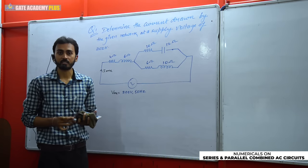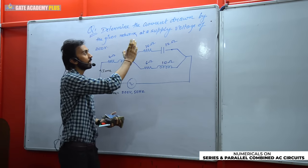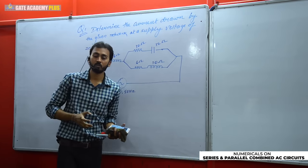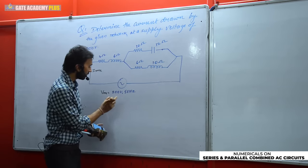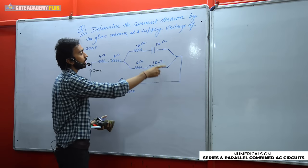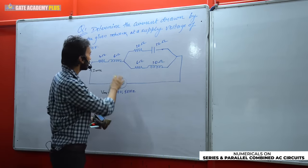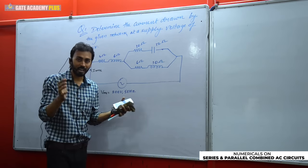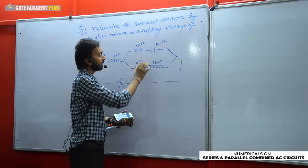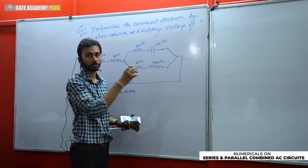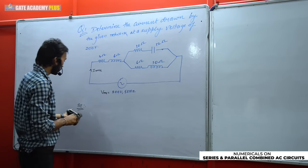How do we approach these combined AC circuit questions? It is a straightforward question — I just want to find the current value. Using Ohm's law: I = V/Z, the V value is given, so we need Z total. The concept is: for series elements, add their impedances. For parallel elements, compute individual branch impedances and then solve the parallel combination.